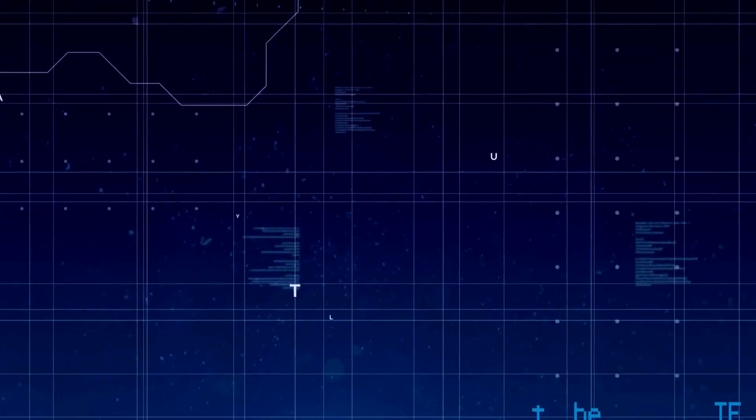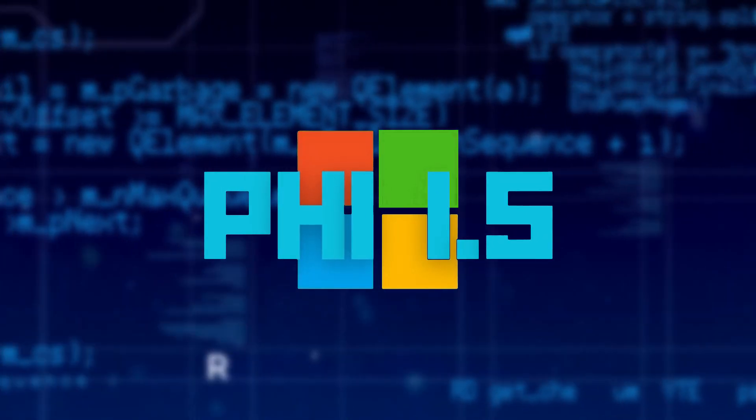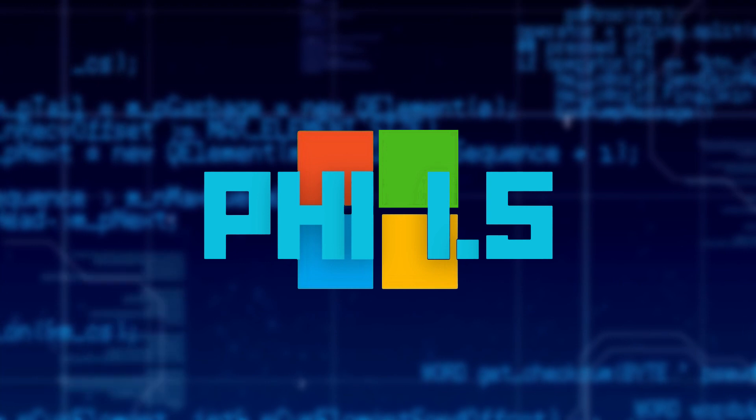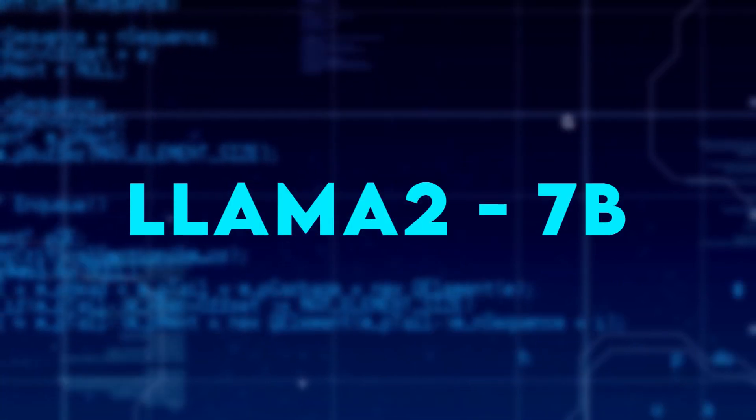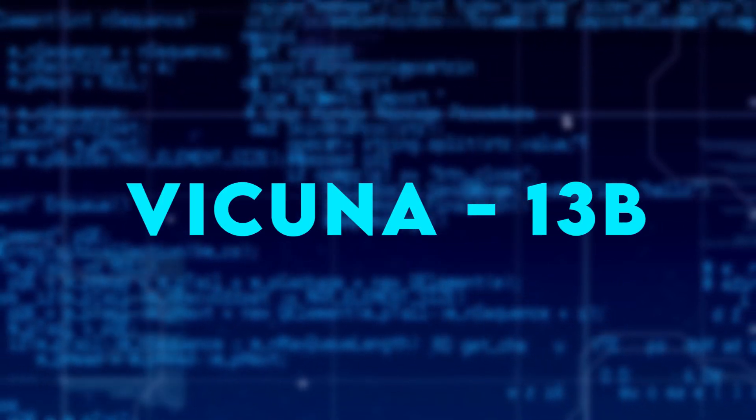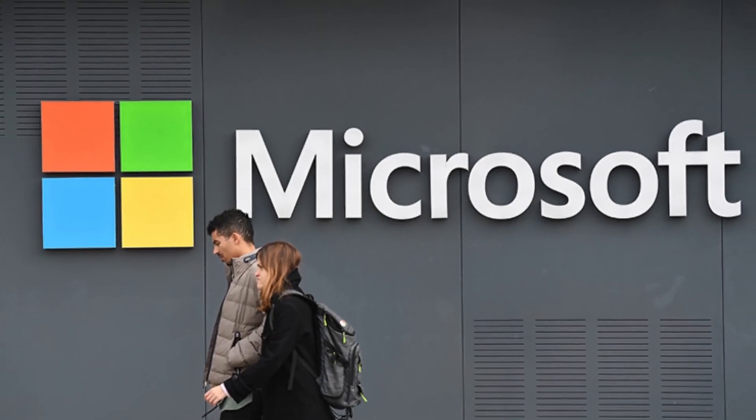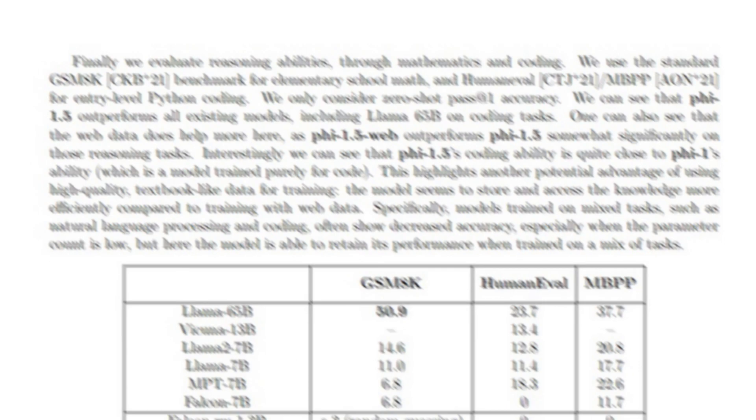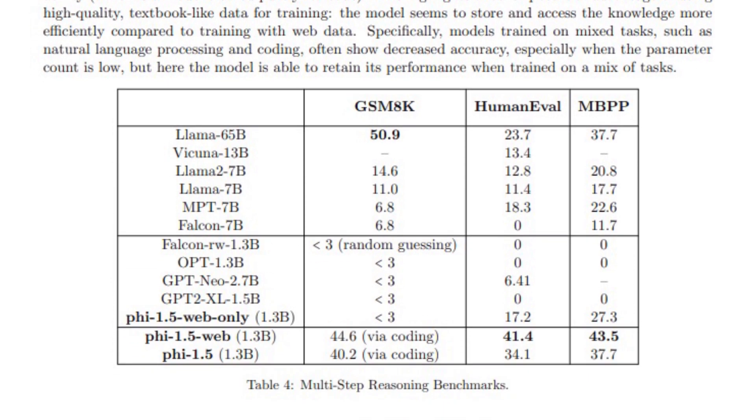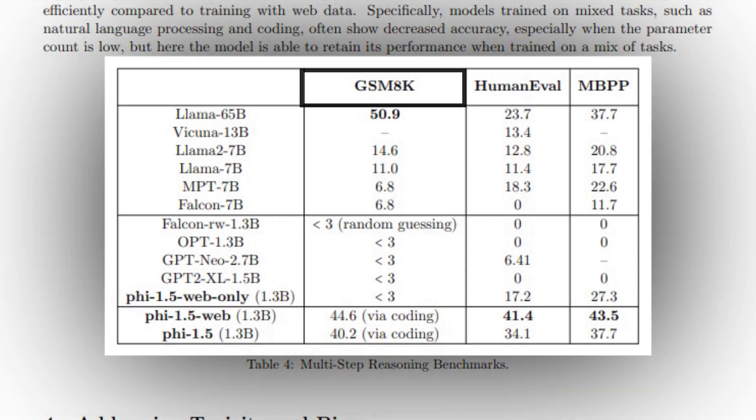It was truly a game-changing moment when they put PHI 1.5 beside large language models like Llama 2 7b, Verkunia 13b, and Opt 1.3b, and the results put Microsoft's new model ahead.